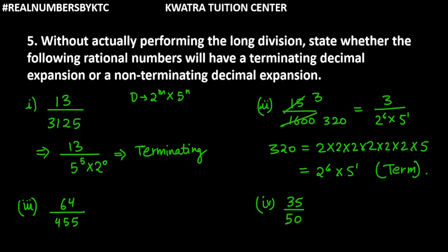Now let's do the third part. We have 64 over 455. Reduction is not happening because one number is even and the other is odd — there is no common factor. When we factorize 455, we get 5 into 91. You can see that 2 is missing from the factorization, and there is an extra factor of 91. Therefore, the number is non-terminating.